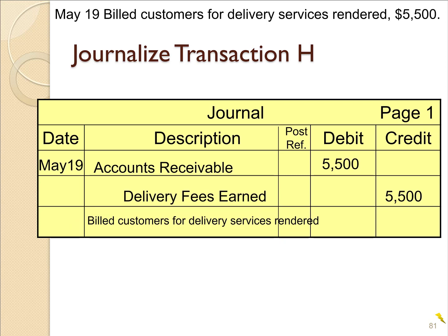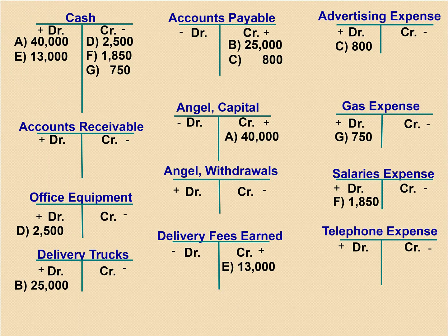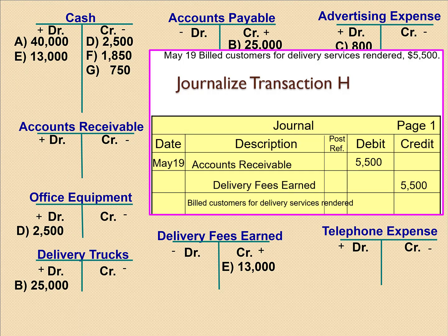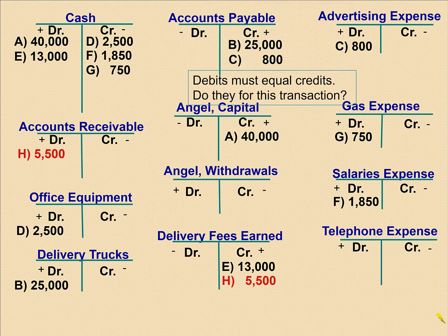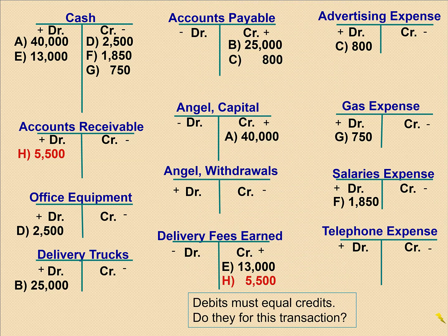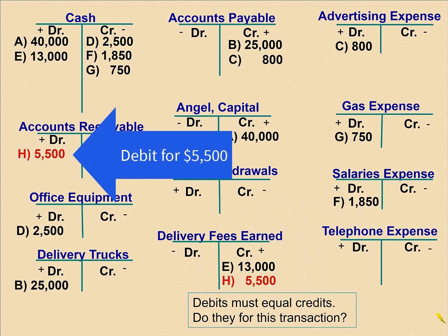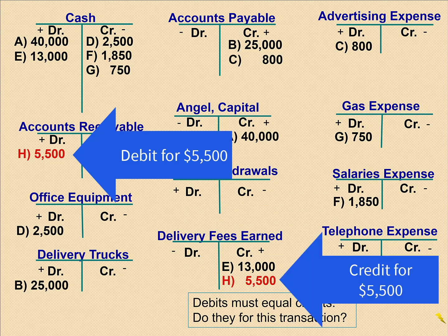Now we need to post this, which just means to copy this information over to the ledger so we can have account balances. Get out your ledger in the form of T-accounts. Here's the journal transaction. We post the debit first: AR is increasing by $5,500. And then we post the credit: delivery fees earned, which is a revenue, increasing by $5,500. And then as always, the last thing we do is double-check. Do you have a debit? Yes, $5,500 debit. And do you have a credit of the same amount? Yes, $5,500 credit.